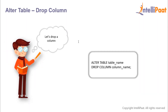Now let's see how we can drop a column from a table. Again we'll start by giving the keywords ALTER TABLE and then we'll give the table name. After that we'll give the keywords DROP COLUMN and specify the name of the column which is to be dropped.